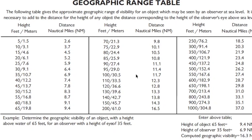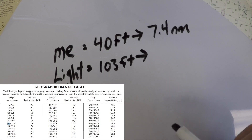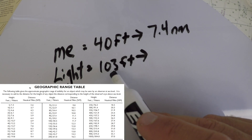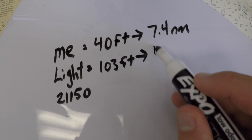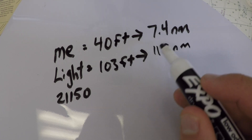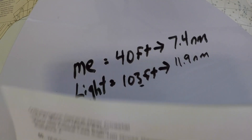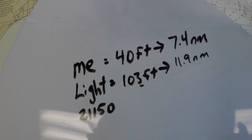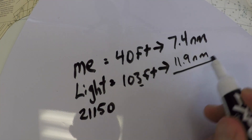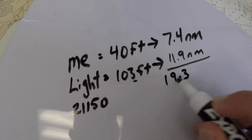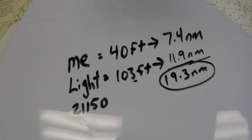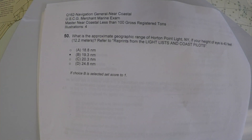For the light at 103 feet, it's not listed directly. The value for 100 feet is 11.7; the value for 110 feet is 12.3. If you chose 11.3 or 11.7, you wouldn't get the correct answer — you have to mentally interpolate. At 103 feet, we are 30% of the way from 11.7 to 12.3, so closer to 11.9 nautical miles. With 11.9 and 7.4, the final answer comes to 19.3 nautical miles. Looking at the choices, we come out to choice B: 19.3 nautical miles.